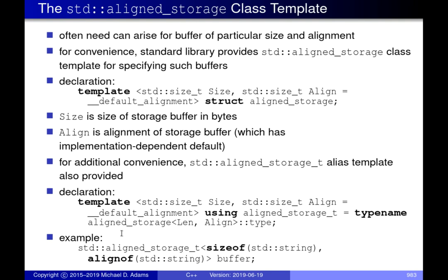The next thing from the standard library is `aligned_storage`. It's a very simple class template. Essentially what it does is allow us to allocate a bag of bytes where the bytes have a certain size and alignment. The template parameters are `size` and `alignment`. So we can basically say: I want the data associated with class objects to be a bag of bytes with a certain size and a certain alignment. You can achieve a similar thing with an array of `char` and `alignas`, but `aligned_storage` does this for you.